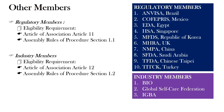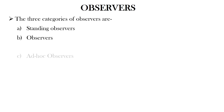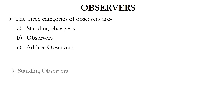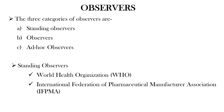Coming to the observers of ICH. There are three categories of observers of ICH. These are standing observers, observers, and ad hoc observers. Currently, there are two standing observers: World Health Organization, i.e. WHO, and International Federation of Pharmaceutical Manufacturers Associations, i.e. IFPMA.